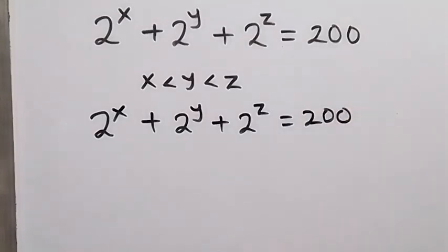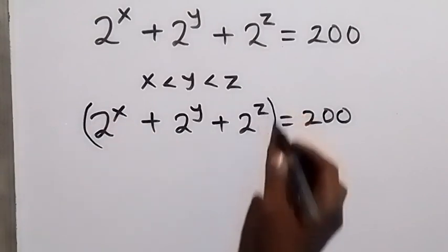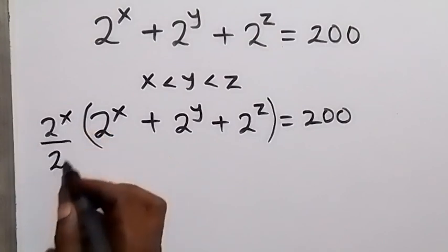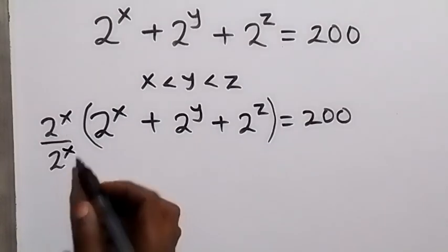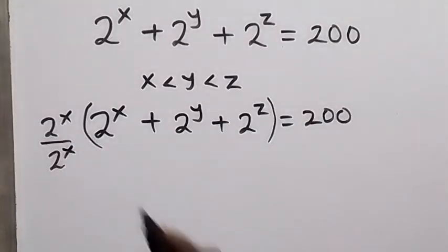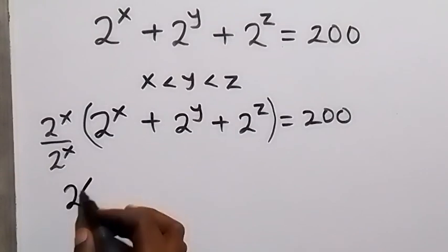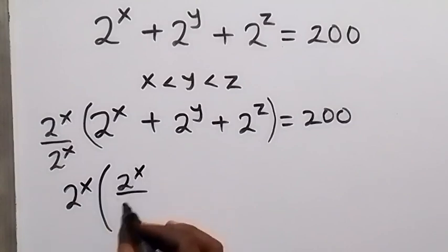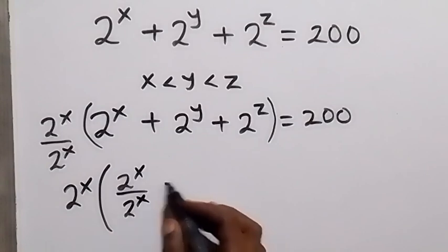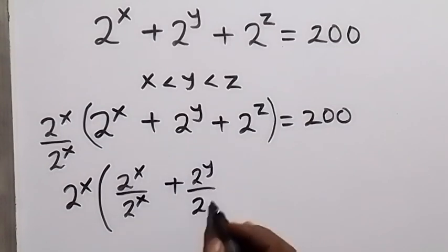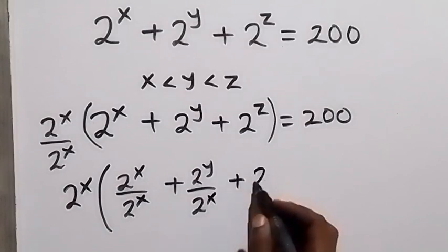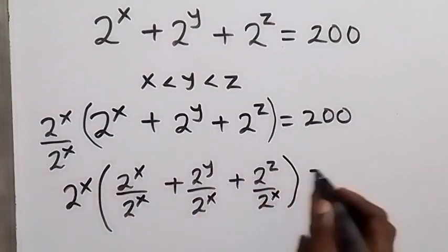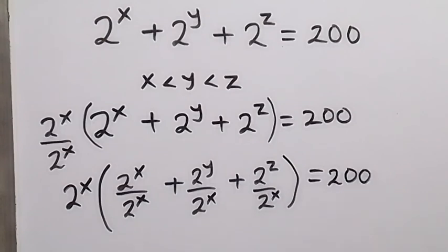From here we can multiply the left hand side by 2 raised to power x and also divide it by 2 raised to power x, so we have not done anything special because this will still be 1. Then we can rewrite it: this will be 2 raised to power x into brackets, taking this one inside — 2^x divided by 2^x, plus 2^y divided by 2^x, plus 2^z divided by 2^x — equals 200.